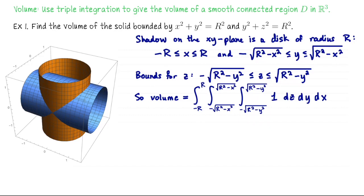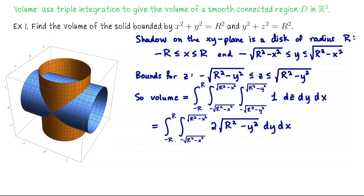The first computation is easy: integrating 1 from a lower to upper bound just gives the length of the interval. The width of the z-interval is top minus bottom, leaving us with a double integral of 2√(R²−y²) dy dx. We've reached a roadblock since we don't want to anti-differentiate this directly. But because our region in the xy-plane is totally symmetric — it's a solid disk, a type 3 region — there's no reason we couldn't switch to a type 2 description.